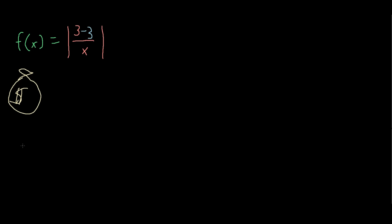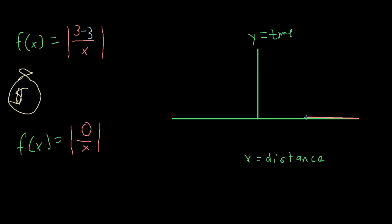That changes the equation to f of x equals the absolute value of 0 over x. And if we draw this graph, you can see the estimated time of arrival of your dad is always zero no matter where he is.